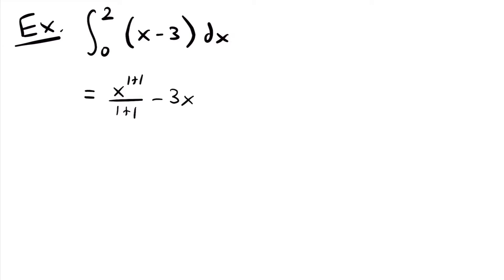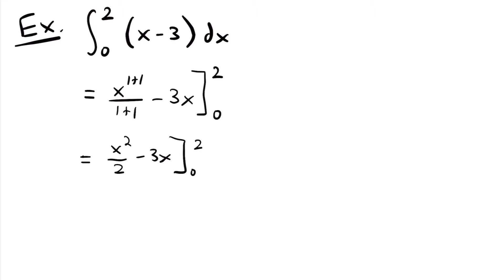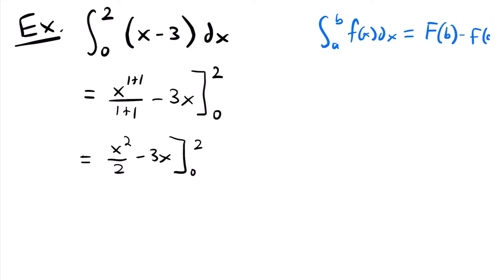That's what dx tells us right here, and so we multiplied 3 by x. And then of course we want to evaluate this from 0 to 2. If we simplify, this will be equal to x squared divided by 2 minus 3x, still evaluating from 0 to 2. Our next step will be to plug in 2 into this function and then subtract plugging 0 into this function. Because if we have an integral from a to b of some function f(x) dx, that equals the antiderivative evaluated at b minus the antiderivative evaluated at a.